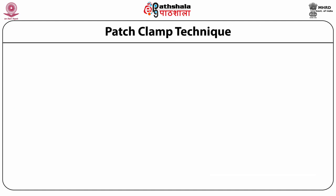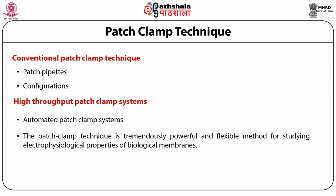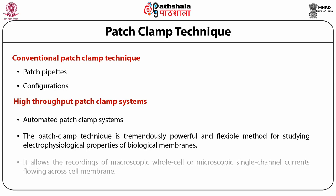Patch clamp technique. There are two methods by which patch clamp technique can be applied: one is conventional patch clamp technique, and the second is high throughput patch clamp systems. In conventional patch clamp, patch pipettes are used and different configurations can be applied. For high throughput patch clamp systems, mainly automated patch clamp systems are used. The patch clamp technique is a tremendously powerful and flexible method for studying the electrophysiological properties of biological membranes. It allows the recording of macroscopic whole cell or microscopic single channel currents flowing across the cell membrane.